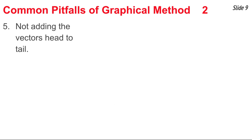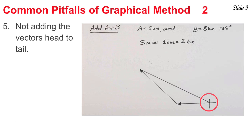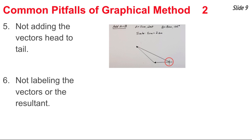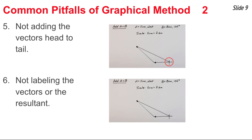The fifth common pitfall is not adding the vectors head to tail. For example, vector A is drawn, but vector B is started at the tail of the first vector rather than its arrowhead, and the resultant is drawn incorrectly. A sixth pitfall is not labeling the vectors or the resultant. In a diagram where vector A is drawn horizontally and vector B is added in a head-to-tail fashion but nothing is labeled, you can't tell which vector is which.